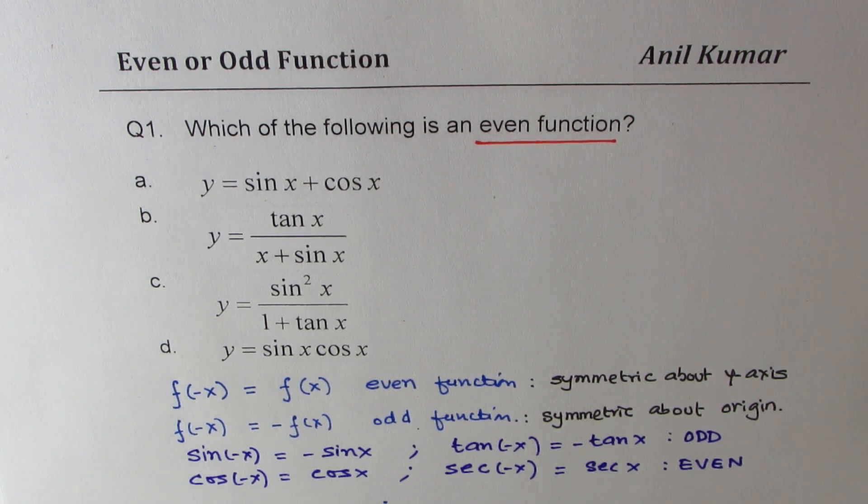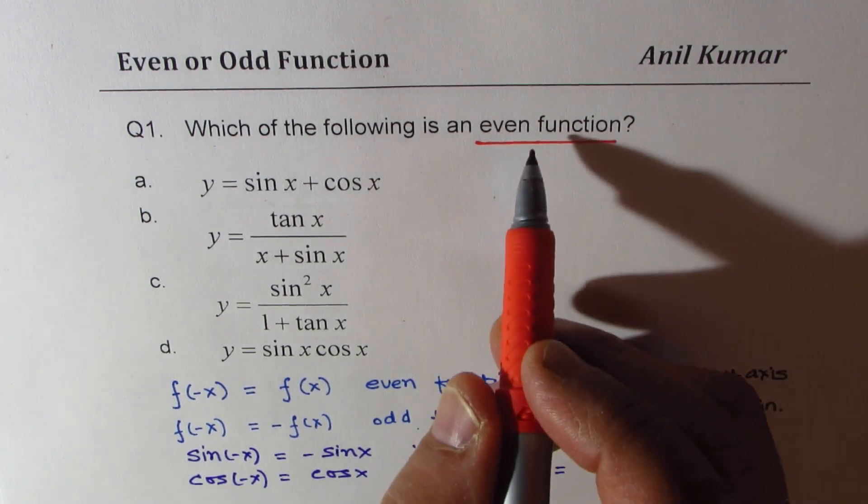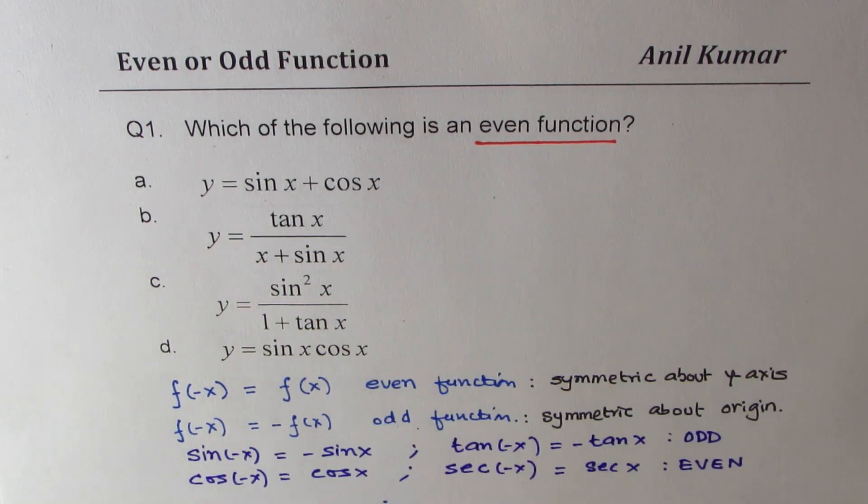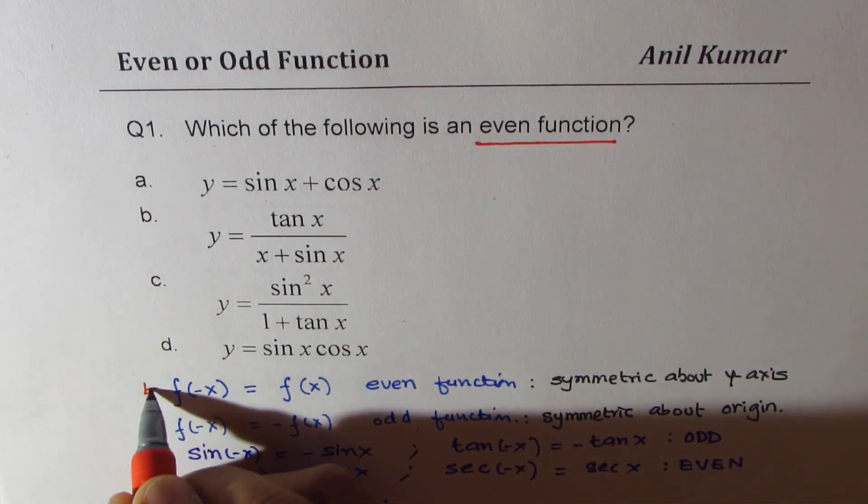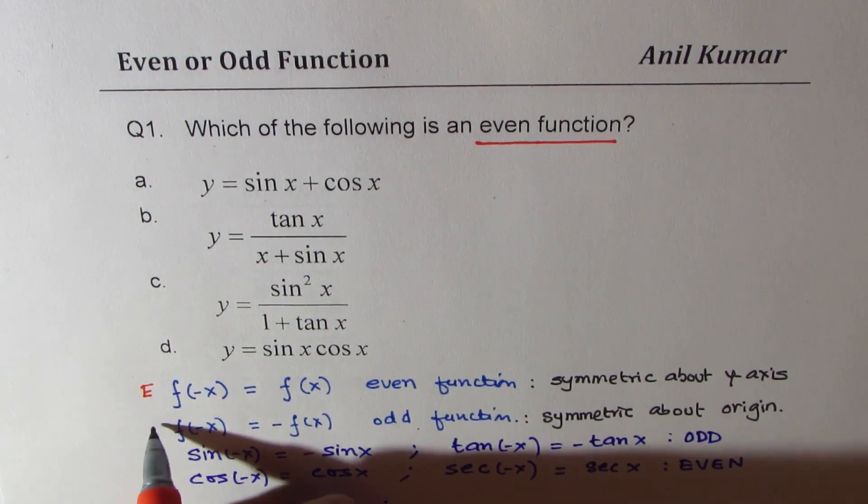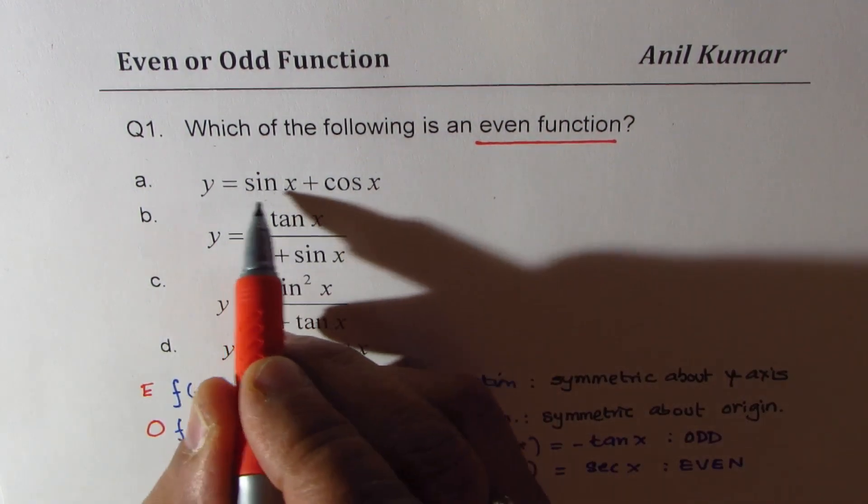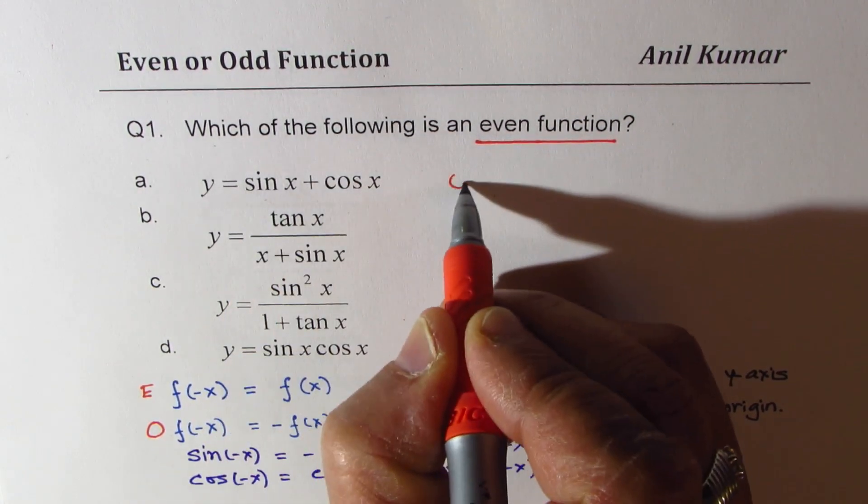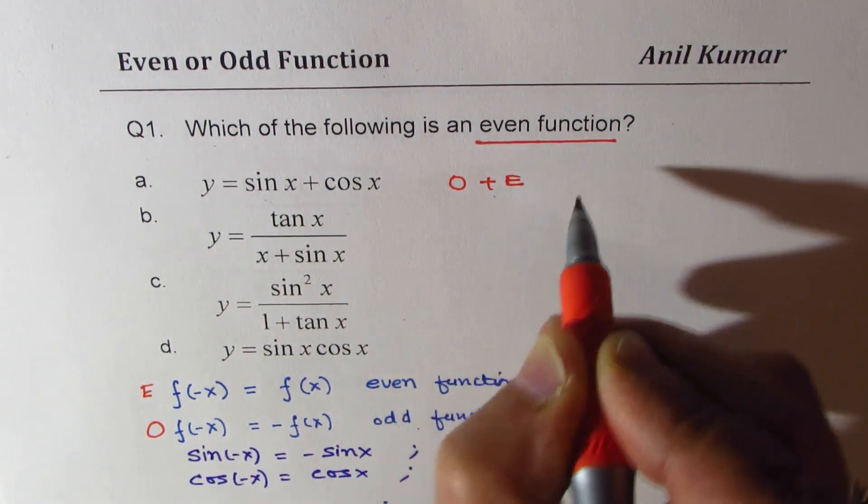Well, here we are talking about addition. For even, I will write e. And for odd, I will write o. So what we see here is we are getting odd plus even. So that is neither.